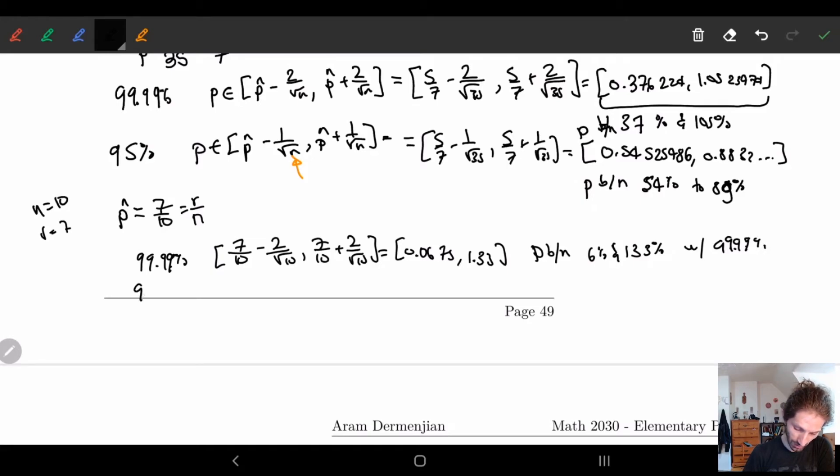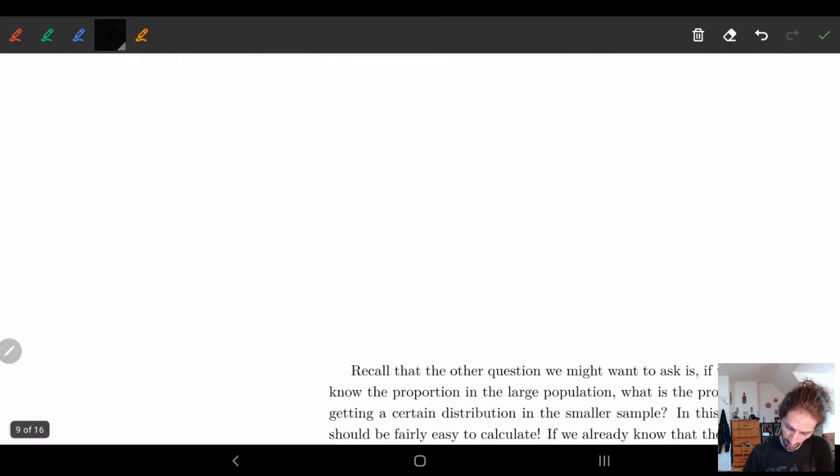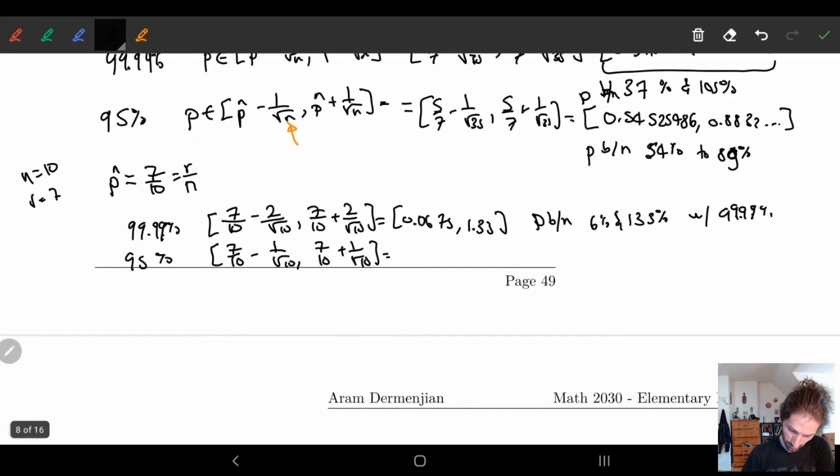If we like a 95%, this changes by a little. We have 1 over square root of 10. 7 tenths plus 1 over square root of 10. Did I have room here? I had room here. Well, too late now.